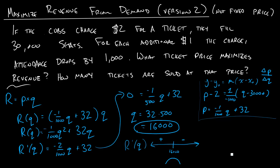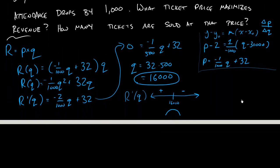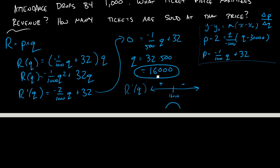It also asks us for how many tickets are sold at that price. So this is the quantity that maximizes revenue. And to get the price that maximizes revenue, we would just want to come back here, to our relationship between price and quantity. And we'll get negative 1 over 1,000 times 16,000 plus 32.